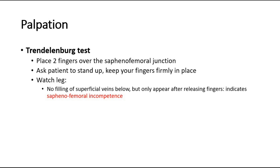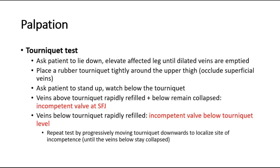The tourniquet test is similar to the Trendelenburg test. Ask the patient to lie down, elevate the affected leg and empty the dilated veins by stroking. Then place a rubber tourniquet tightly around the upper thigh to occlude the superficial veins, and ask the patient to stand. This differentiates whether the incompetent valve is at the saphenofemoral junction or at a perforator below the tourniquet level.